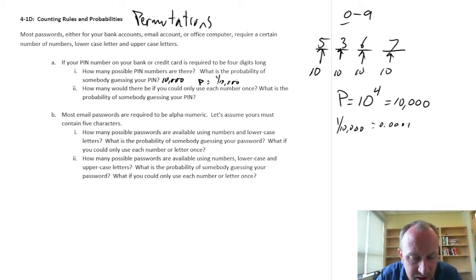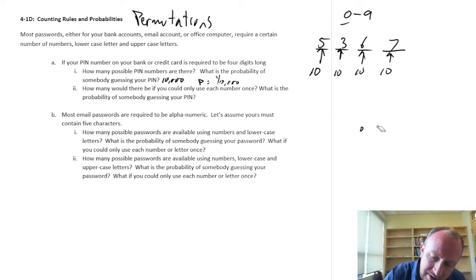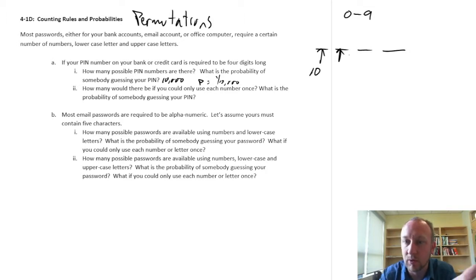How many possible pin numbers would there be if I could only use each number once? So, what that means is that, again, I can choose between 0 and 9, but it means that for the first digit, I can choose one of these 10 options, but once I've chosen a value, let's say I choose 3, 3 no longer exists as an option for the second value, so now I only have 9 options.